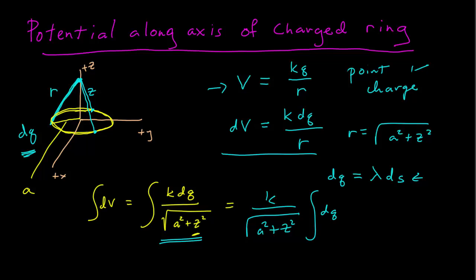And so we don't have to parametrize at all. Since everything is a constant as we integrate around the ring, we just integrate all our little elements of dQ, and we get the total charge Q.